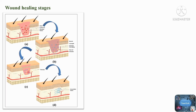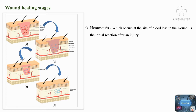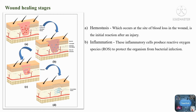Hemostasis, which occurs at the site of blood loss in the wound, is the initial reaction after an injury. The second stage is inflammation, which lasts from 24 hours to 4 to 6 days and begins with the release of proteolytic enzymes and pro-inflammatory cytokines into the wound area by invasive immune cells.